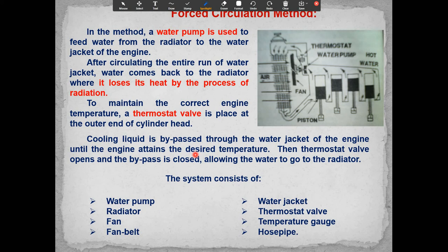The forced circulation system consists of the following components: water pump, water jacket, radiator, thermostat valve, fan, temperature gauge, fan belt, and hose pipes.